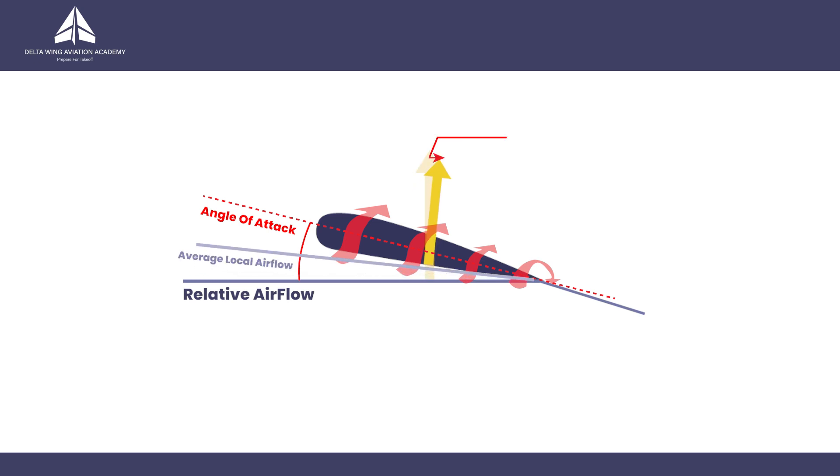An inclined local airflow is created, which is the average of relative airflow and the deflected airflow, resulting in the lift vector tilting backwards and contributing to total drag.